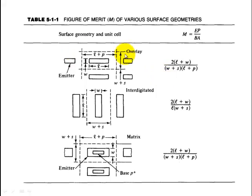For overlay, M equals 2(L+W) divided by (W+S)(L+P). For interdigitated, M equals 2(L+W) divided by L(W+S). For matrix, M equals 2(L+W) divided by (W+S)(L+P). This is the figure of merit for the different geometries.